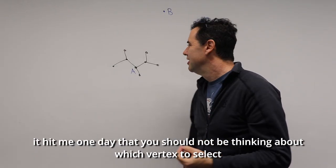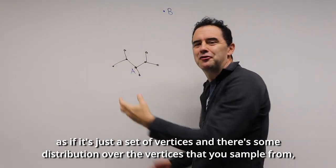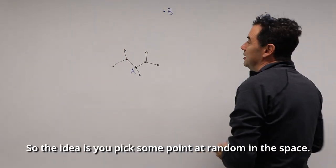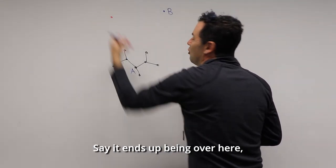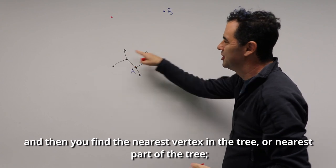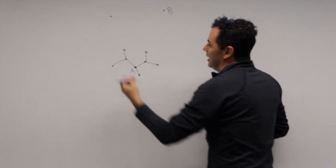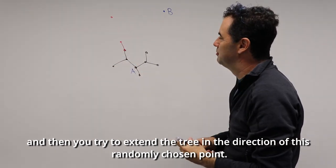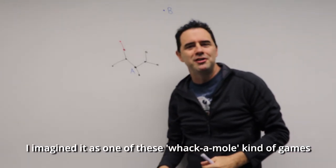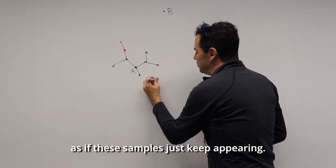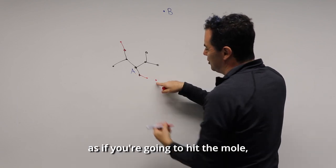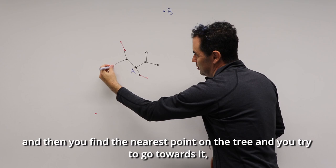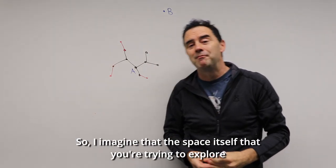After many years of thinking, it hit me that you should not think about which vertex to select as if sampling from a distribution over the vertices — but rather you're really sampling from the space itself. The idea is: pick some point at random in the space, find the nearest vertex in the tree, and then extend the tree in the direction of that randomly chosen point. Maybe you try to drive all the way there, or maybe you don't.